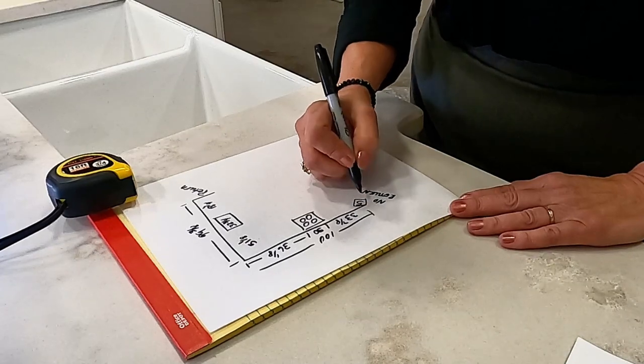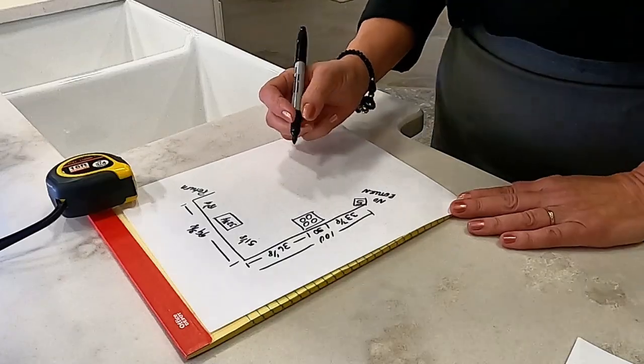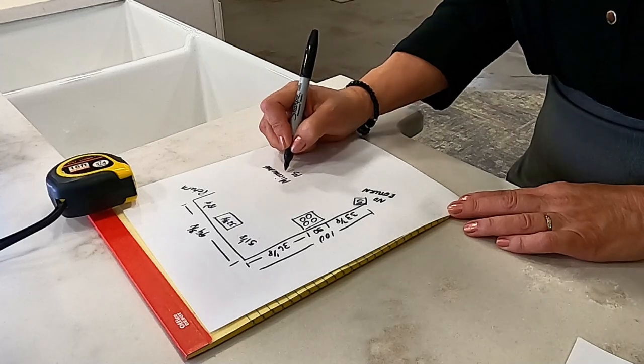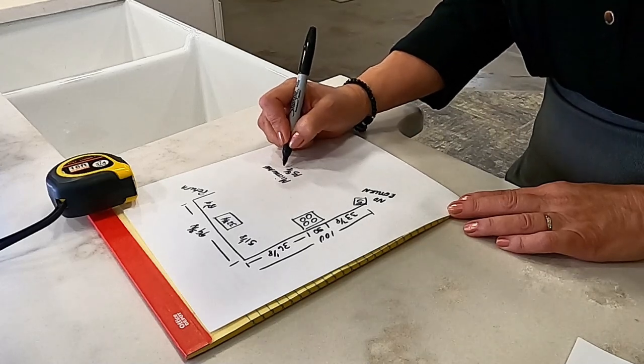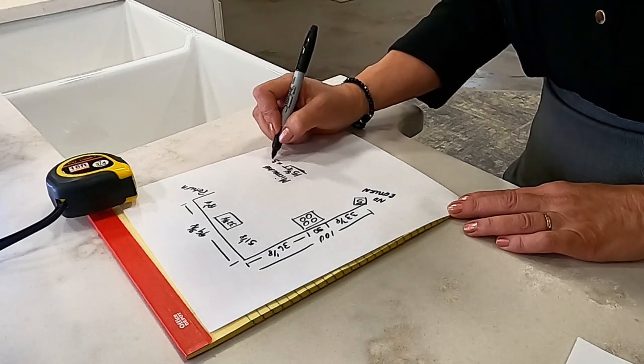And that's pretty much it except for now we need the measurements of the microwave to be written down, which is your height and your width. The width on them are usually about 30, 29 and three quarters, something like that. Just double check that for me.